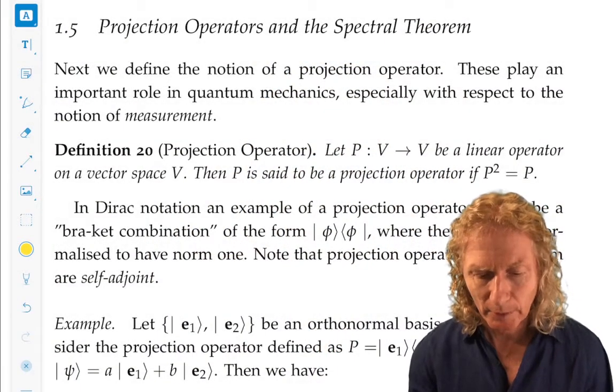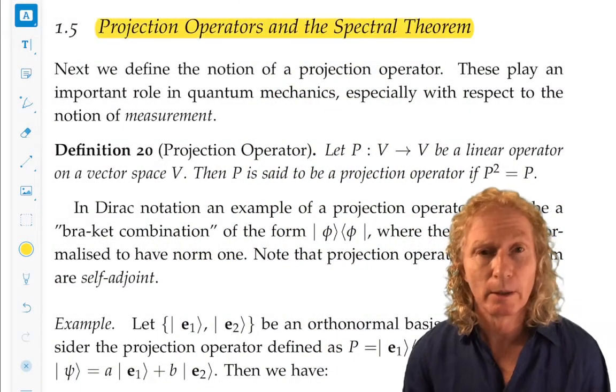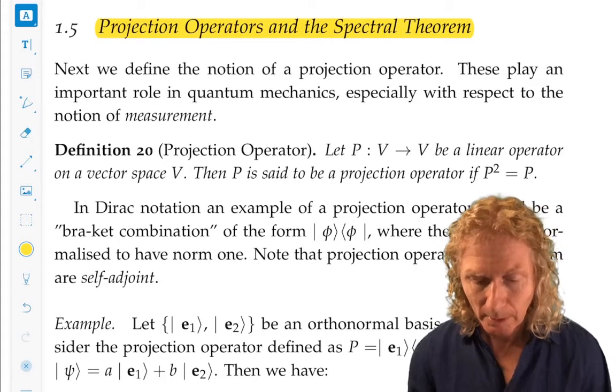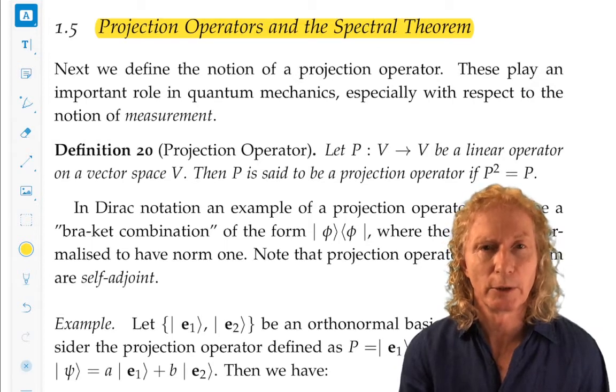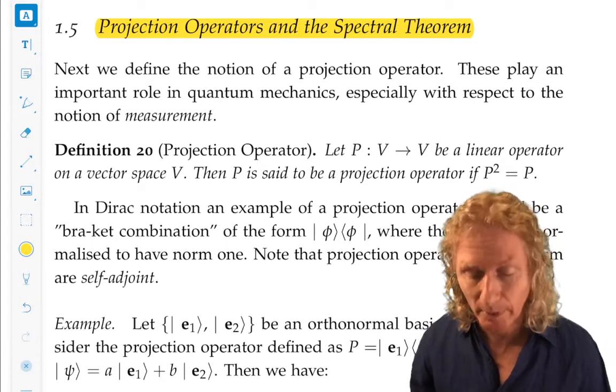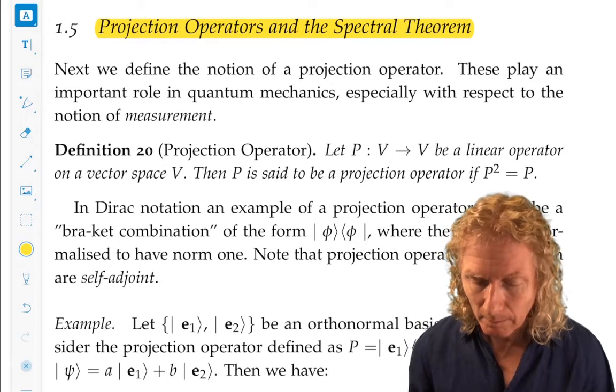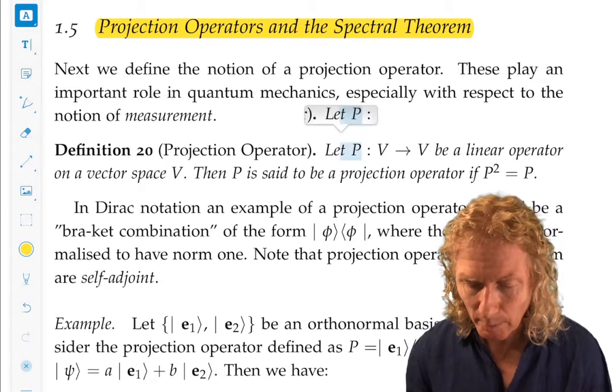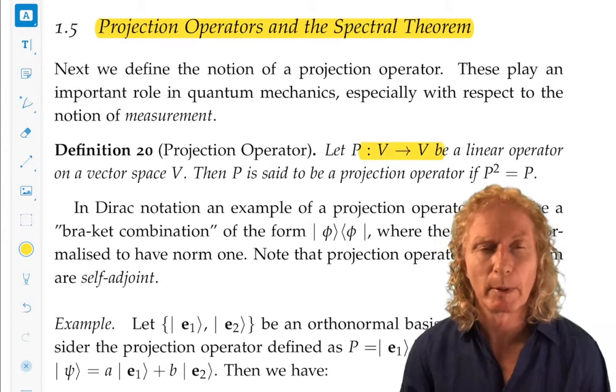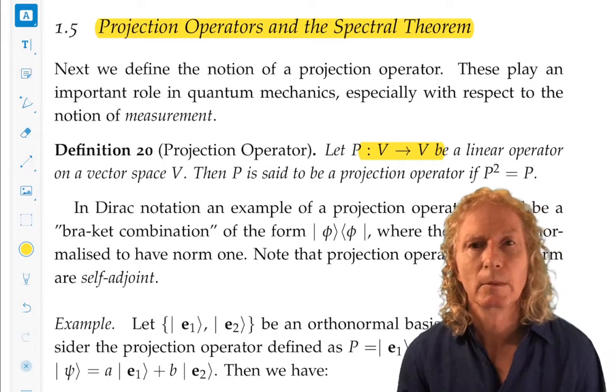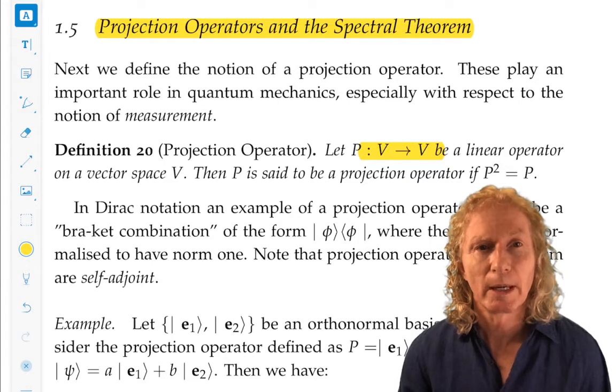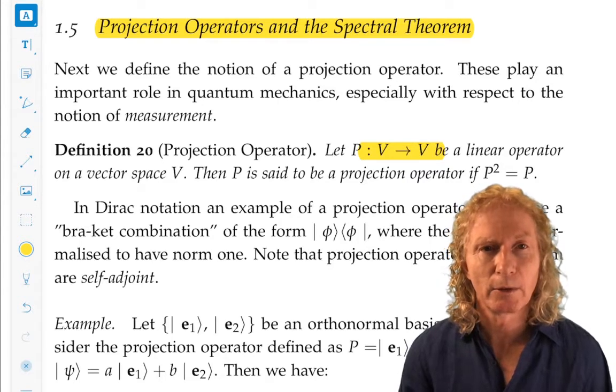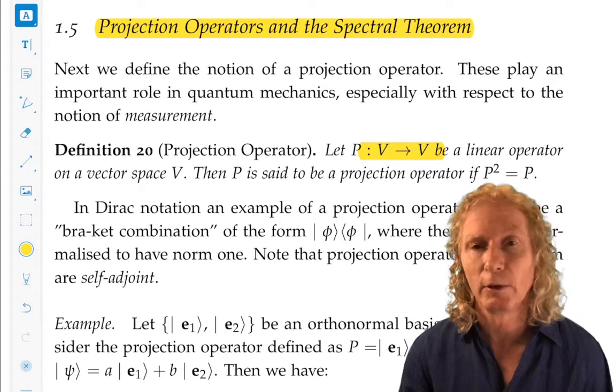So this is the last bit of Chapter 1. V is going to be our complex inner product space, linear space, complex inner product vector space. And maybe you have seen the definition of a projection operator. So it's a linear operator that maps V into V that has the property that P acting on itself twice, or P squared, is equal to P.